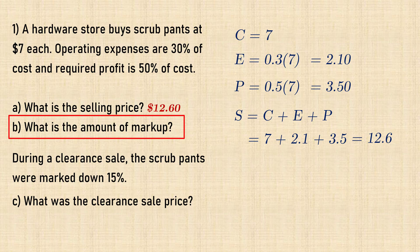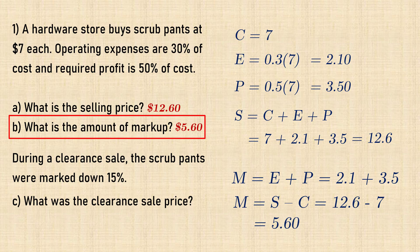For part B, markup can be found by adding expenses and profit, or by selling price minus cost, and that is $5.60.